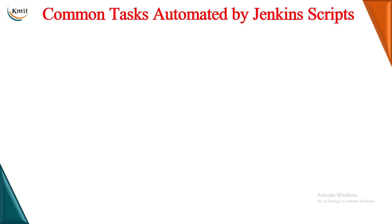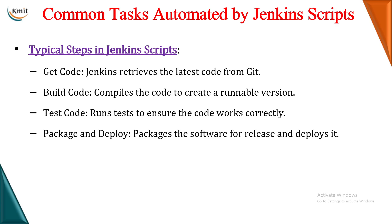Let us see what are the tasks that are generally automated when we write Jenkins script. The first thing is code. Whenever you are doing any modification in your project and pushing that modification into GitHub, you need not tell Jenkins that your GitHub repository is updated. By writing scripts, your Jenkins will automatically trigger whenever it finds any modification in GitHub.